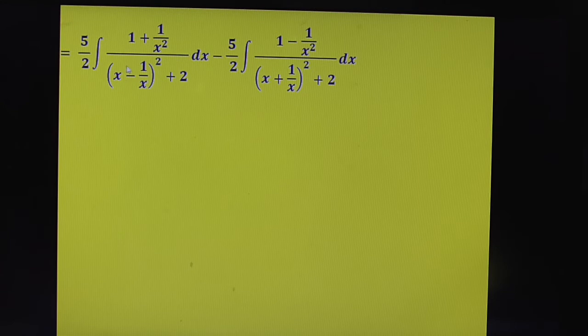Let x minus 1 by x equal t. Differentiate. x differentiation is 1. 1 by x differentiation is minus 1 by x square. Minus of minus gives plus. Therefore, dt is 1 plus 1 by x square dx.